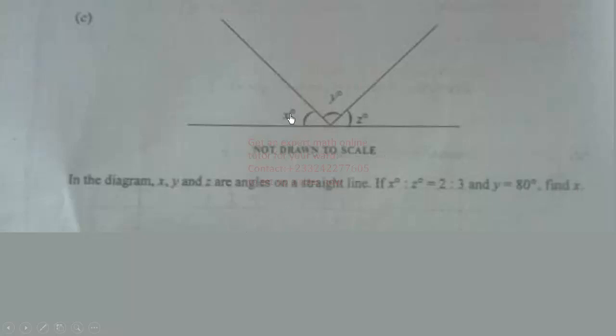So let's begin the solution. We know that the sum of angles on a straight line will give us 180 degrees. That is what we know. So let us write that down: x + y + z = 180°.